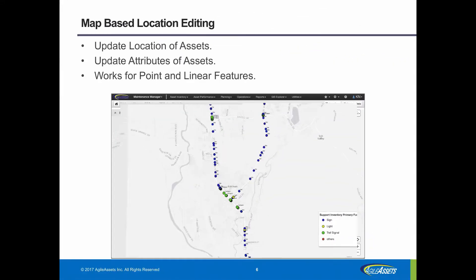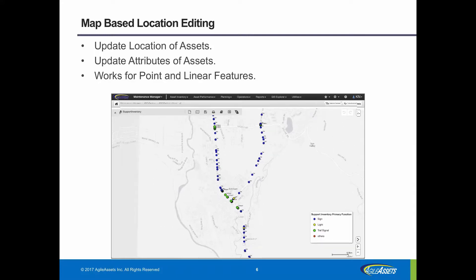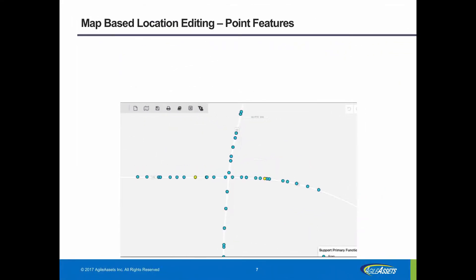We've enhanced the application's maps interface, GIS Explorer, to support editing of the location of points and linear features, which are essentially proxies for assets, directly on the map, as well as updates to the attributes of these features. Here you've got a map of support structures carrying signs, light, traffic, or an assembly with multiple functions.